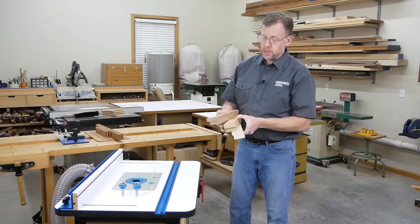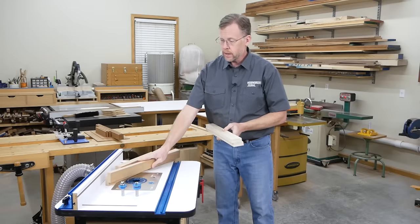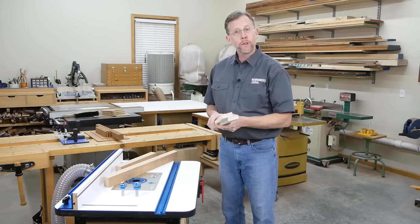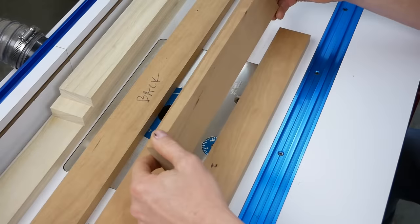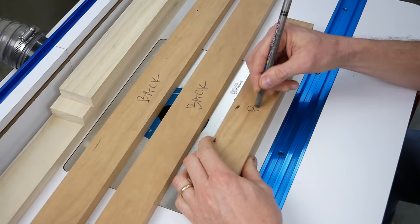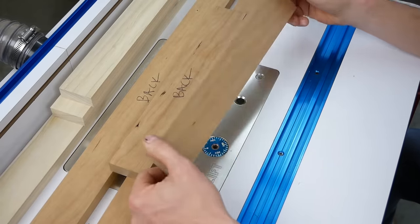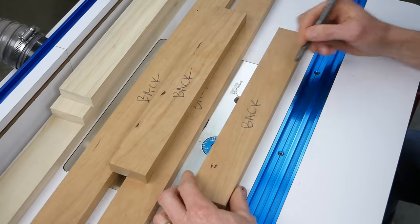Go ahead and mill up stock for your rails, your styles, and a couple of scrap pieces to test your bit setups. Make sure that they're all flat, square, and of consistent thickness. Also, if you're choosing show faces for your doors, mark them in some way to keep that clear. All of these cuts are going to happen with the front faces of the rails and styles pointing down on the router table.